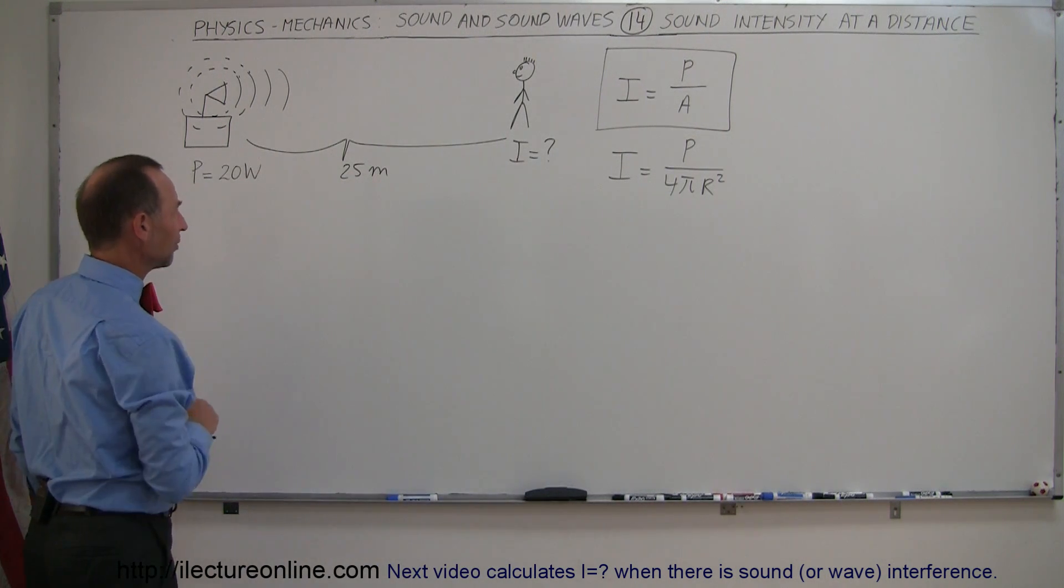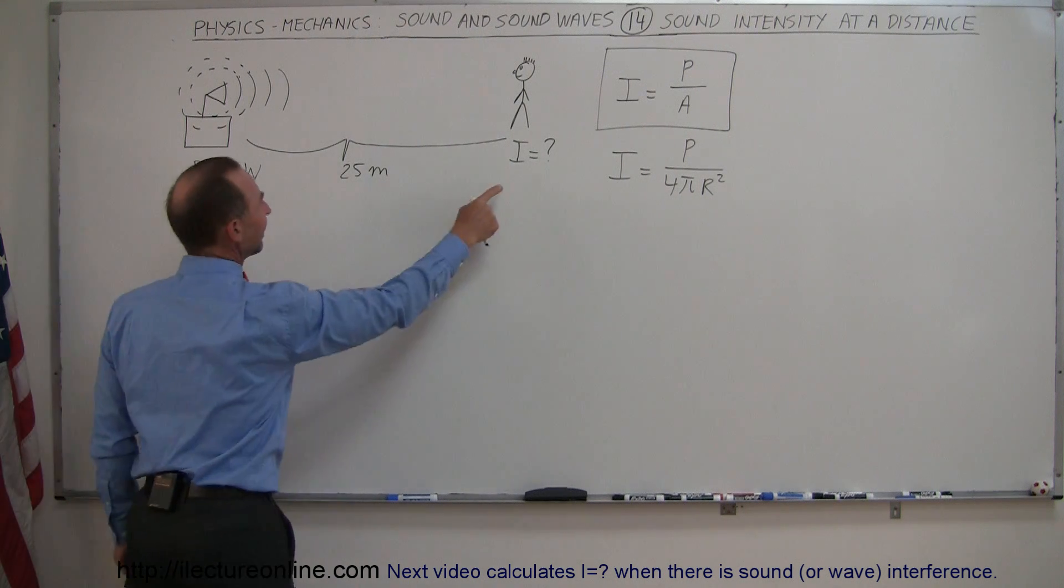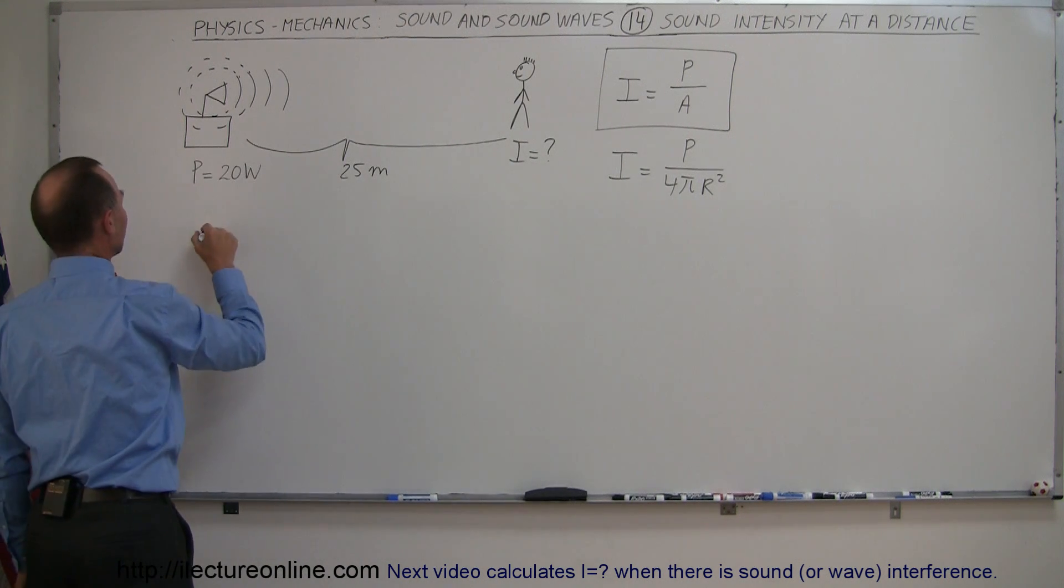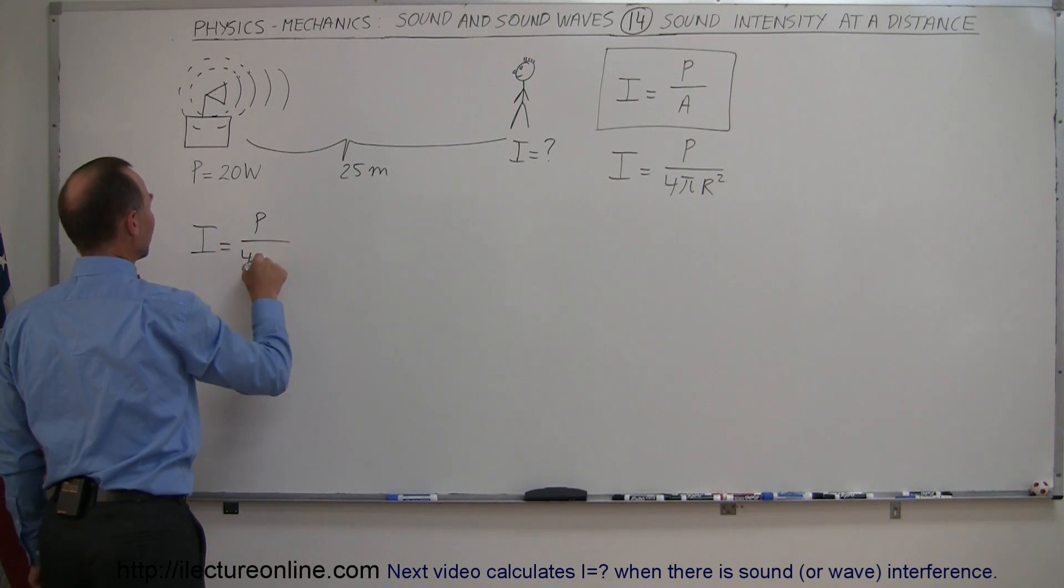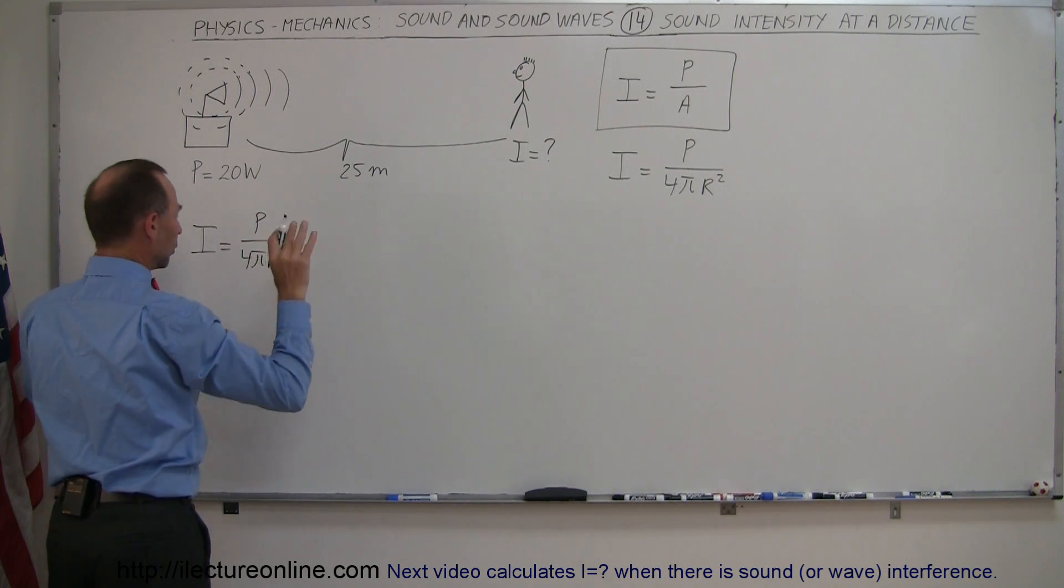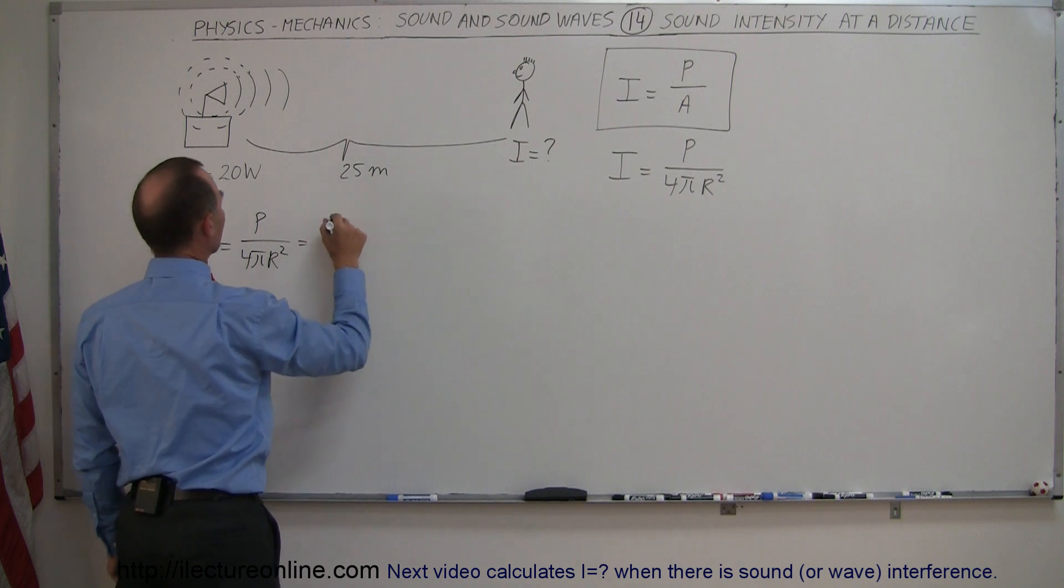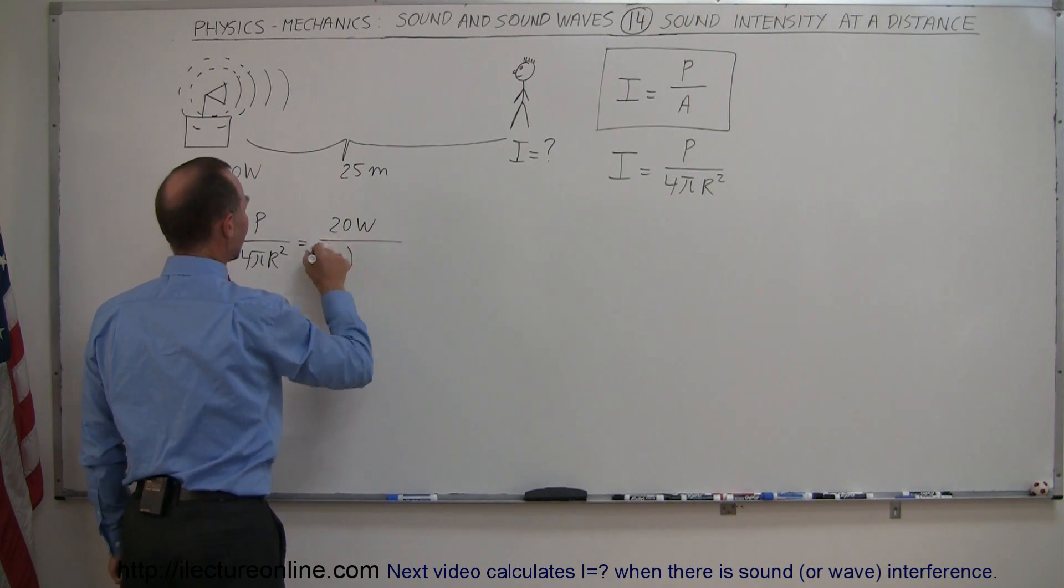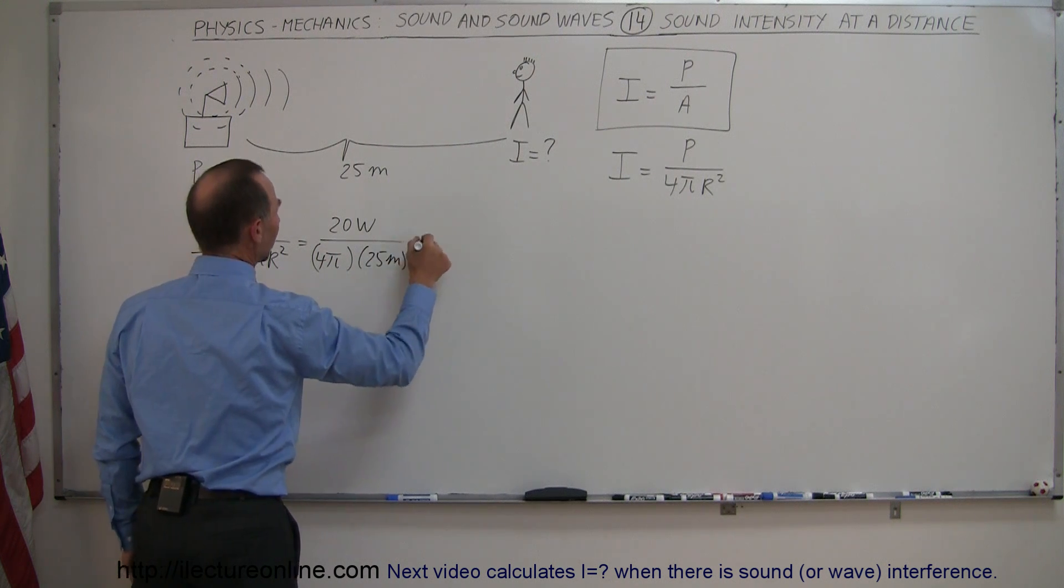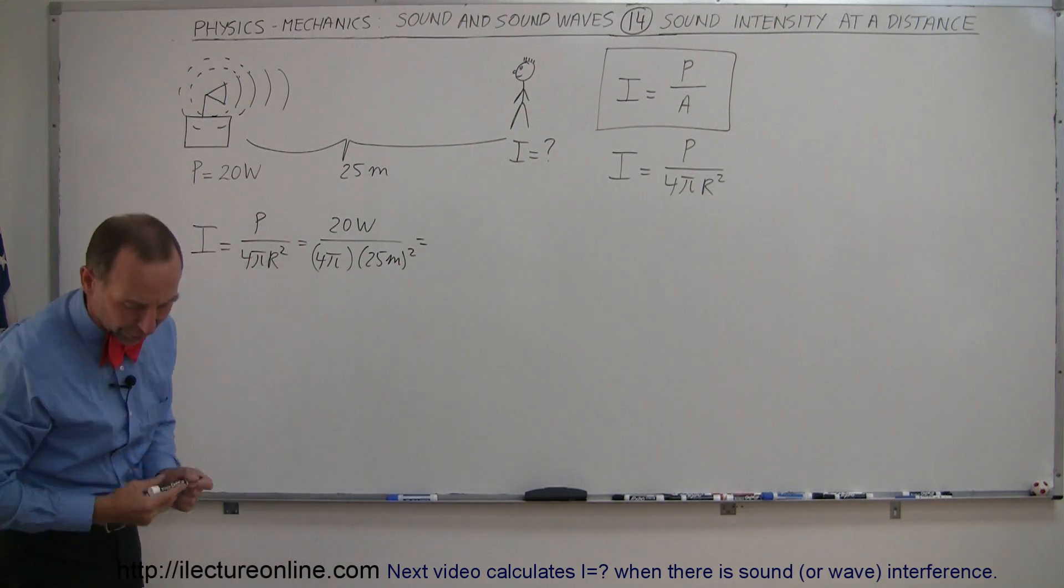Alright, let's plug in some numbers. So we want to know the intensity at 25 meters. The intensity is equal to the power divided by the surface area of that expanding balloon, so to speak. So this is equal to 20 watts divided by 4π times 25 meters. We square that. So let's see what the intensity is.